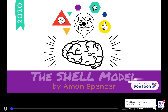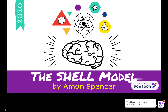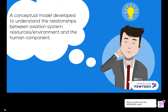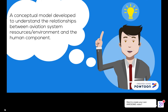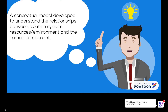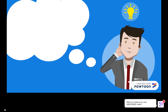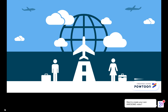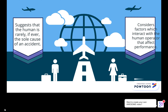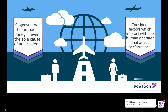Hello, I'm Eamon Spencer and welcome to my presentation on the Shell Model of Human Factors. The Shell Model was developed to understand the relationships between aviation system resources, environments, and the human component. The model suggests that the human is rarely, if ever, the sole cause of an accident, and considers factors which interact with the human operator that affect performance.